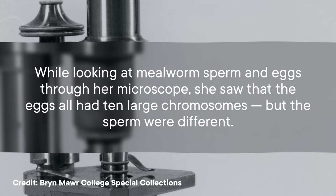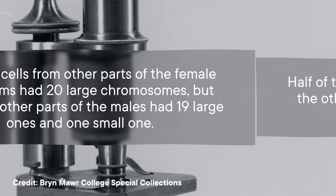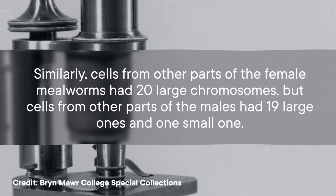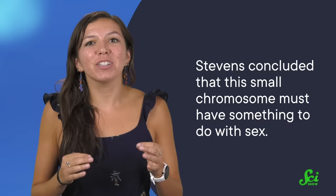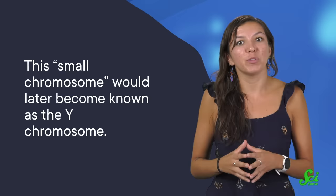With these ideas in hand, plus plenty of her own research, Stevens published a breakthrough paper in 1905 on sex determination in various insects, including mealworms. While looking at mealworm sperm and eggs through her microscope, she saw that the eggs all had ten large chromosomes, but the sperm were different. Half of them had ten large chromosomes, but the other half had nine large chromosomes and one small one. Similarly, cells from female mealworms had 20 large chromosomes, but cells from males had 19 large ones and one small one. Stevens concluded that this small chromosome must have something to do with sex — and she was right! This small chromosome would later become known as the Y chromosome.